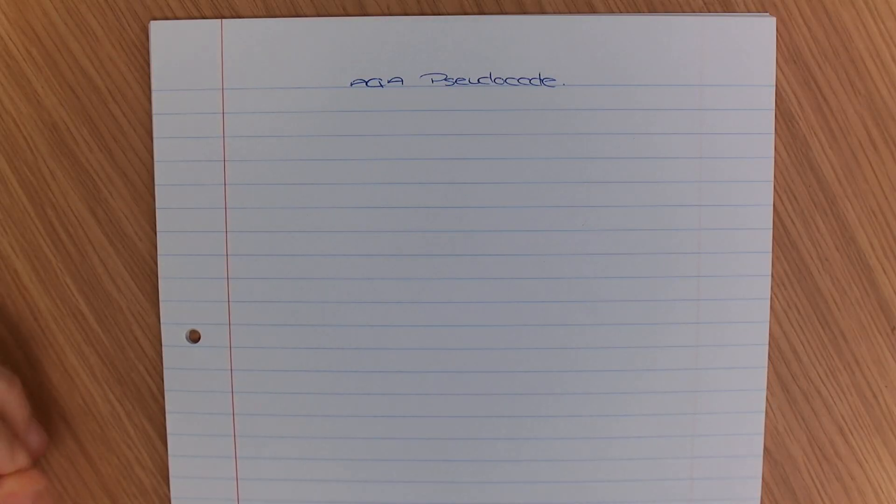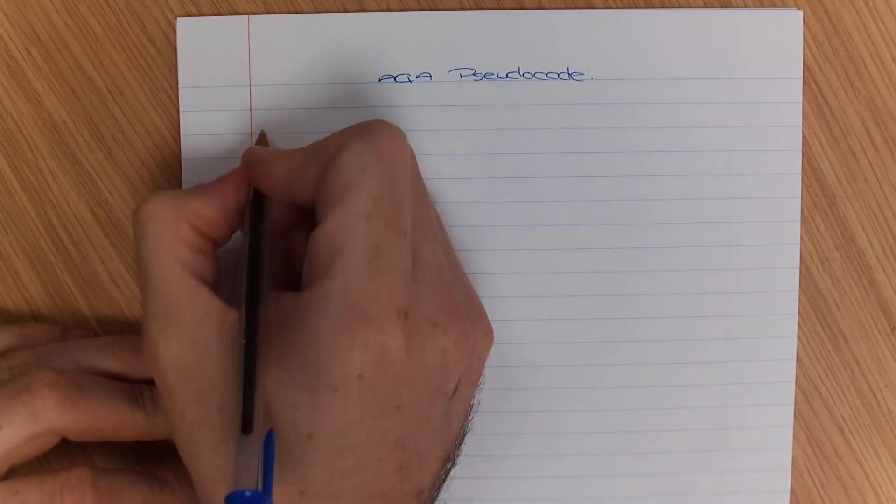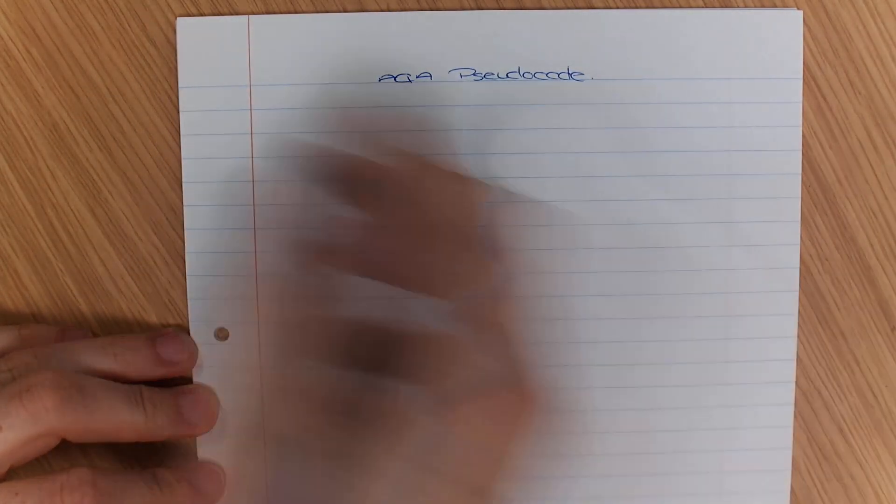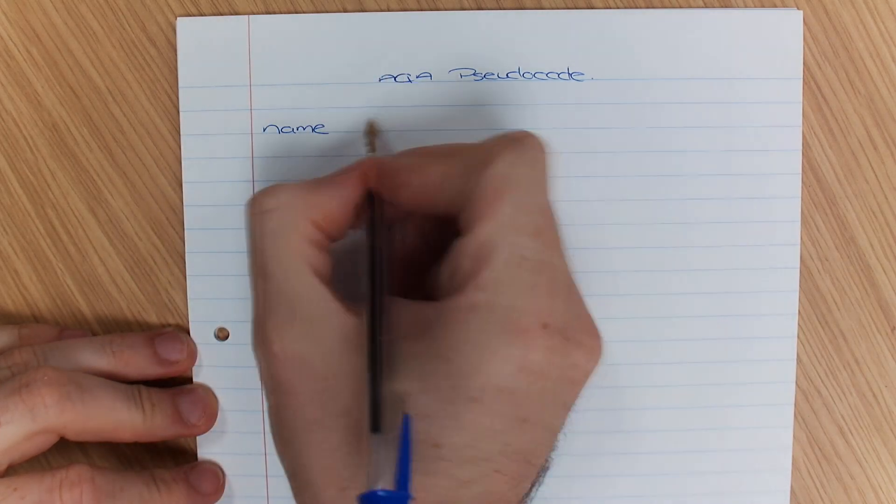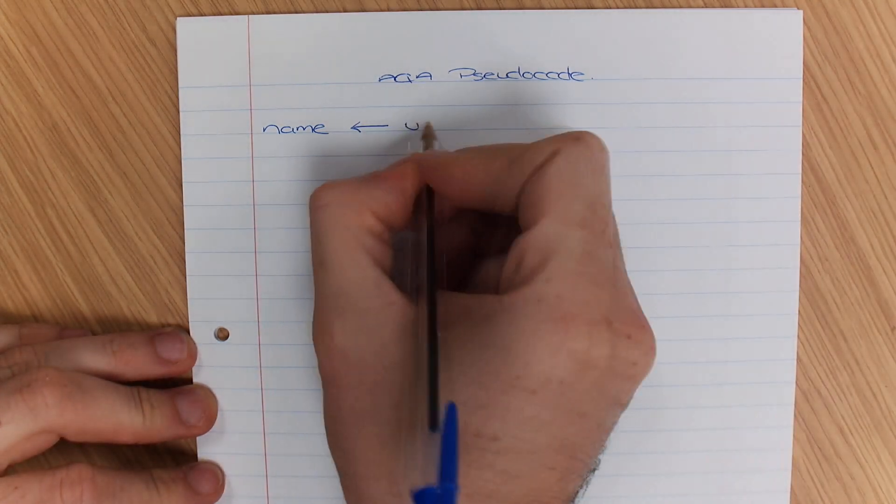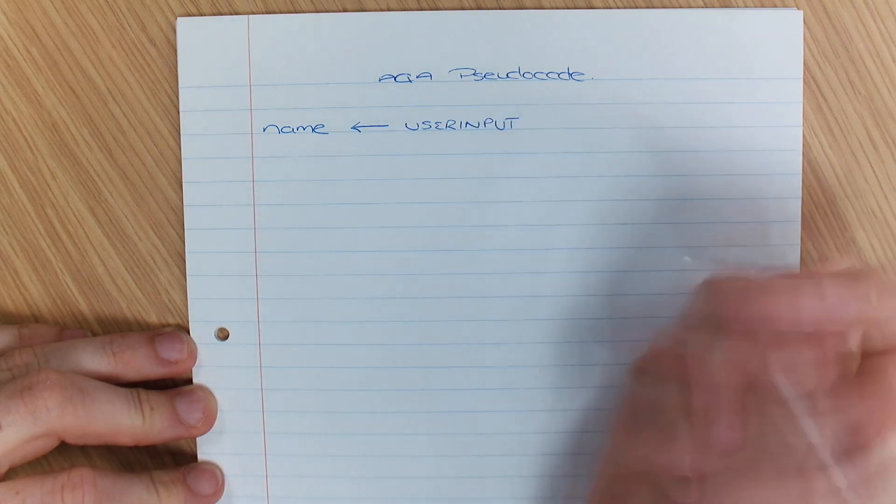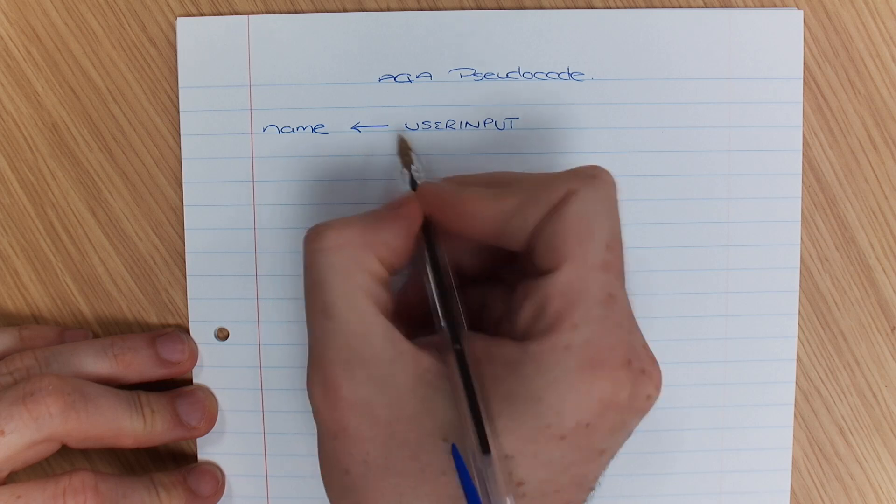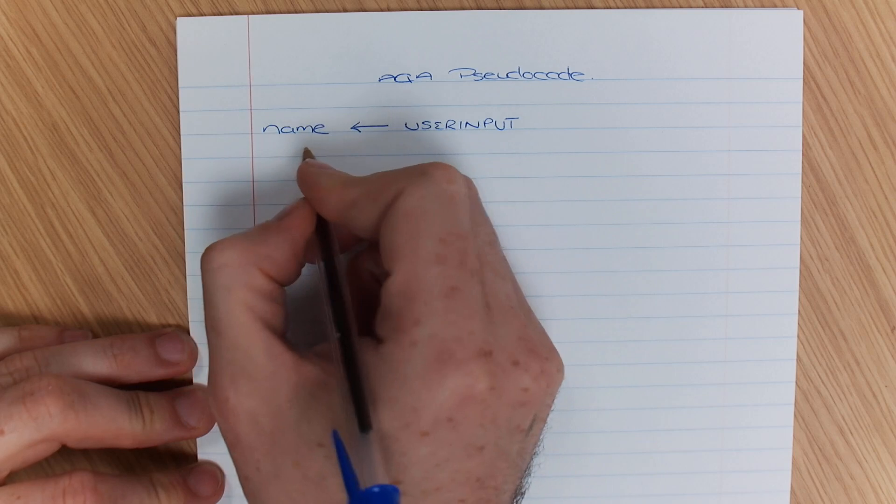Now, one of the things with AQA pseudocode is you need to remember that when you are declaring variables we use the arrow. So I'm just going to do a simple program here with you that outputs my name. So if I did name and I'm going to go arrow, I'm going to go user input. So what that does is the arrow, if you've forgotten, is an assignment. So that's to say I'm assigning some user input into the name.